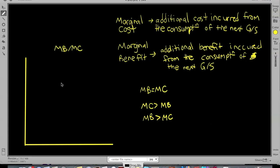We're going to be looking at marginal analysis. First, let's look at marginal cost. Marginal cost is the additional cost incurred from the consumption of the next good or service. And marginal benefit is the additional benefit incurred from the consumption of the next good or service.